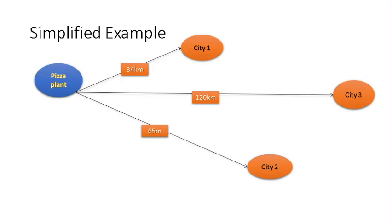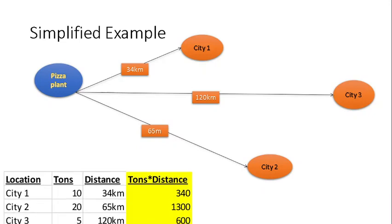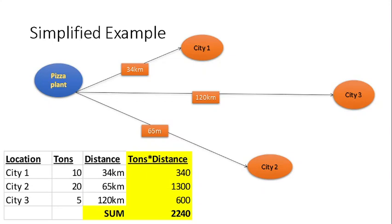Those retailers are located in city 1, 2 and 3 and those are the distances from our plant. If we gather all those distances into one table, we can identify that we need to deliver for city 1 10 tons per month, for city 2 retailer 20 tons per month and for city 3 5 tons per month. The distances are given as you can see here.